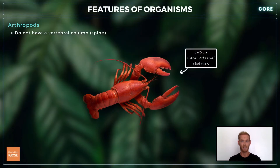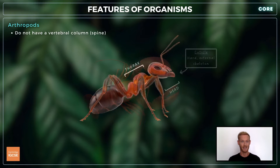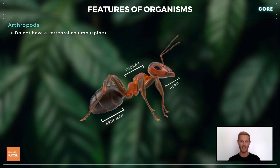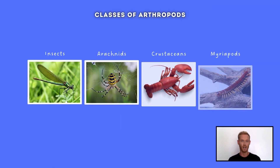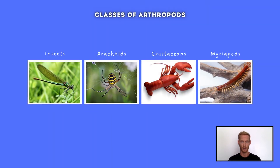Now onto the different classes of arthropods, which are members of the animal kingdom that don't possess a backbone. Their hard external skeleton, also known as a cuticle, encloses their bodies providing protection and support. Their segmented bodies are divided into three distinct regions: the head, thorax and abdomen. You need to know about four classes of arthropods: insects, arachnids, crustaceans and myriapods.